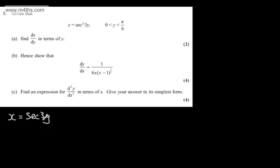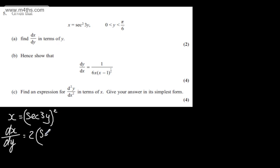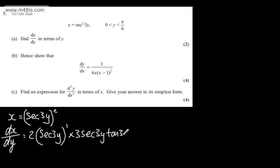Let's write that x is equal to sec(3y) squared. Differentiating both sides with respect to y, we use the chain rule: multiply down by the power, rewrite the inside function, drop the power by one, and multiply through by the derivative of the inside function. The derivative of sec(y) is sec(y)tan(y), so the derivative of sec(3y) will be 3sec(3y)tan(3y).